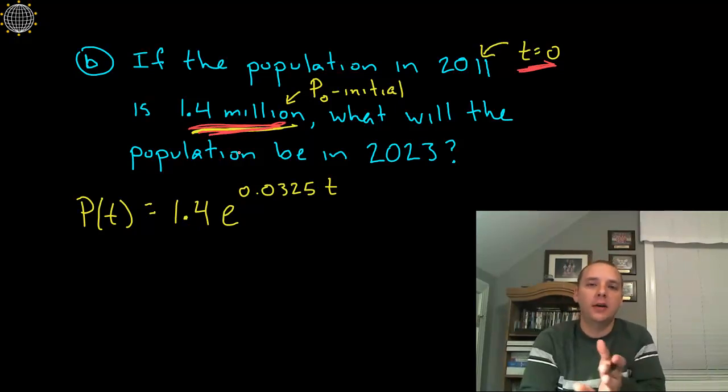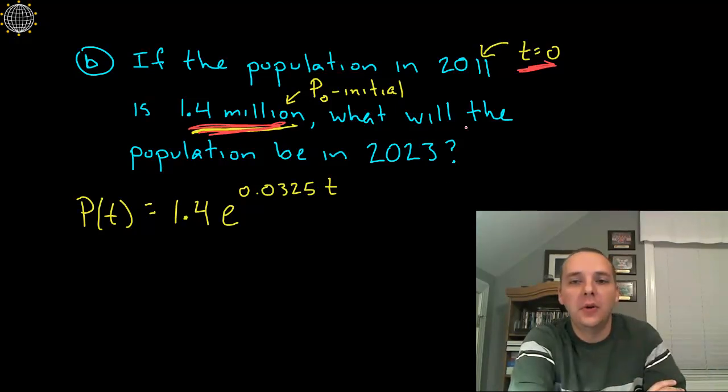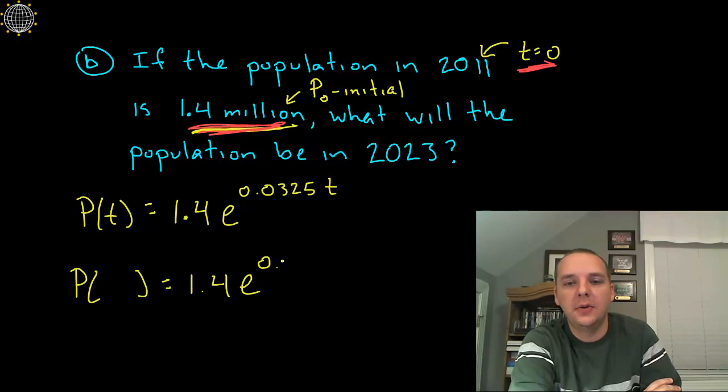So we're using 2011 as time 0 or our starting time. So if we want to know what the population is in 2023, all we would need to do is plug in the time corresponding to 2023. So we'd have 1.4 times E to the 0.0325 times something.